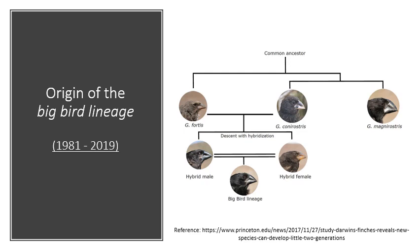The fourth case study involves the origin of the big bird lineage in the Galapagos Archipelago, discussed in detail in the previous lecture. A bird flew from one island to another and mated with the resident species Geospiza fortis, a medium ground finch. It was initially thought the new bird was a hybrid of Geospiza fortis and Geospiza scandens, but phylogenetic analysis revealed it was actually a hybrid of Geospiza fortis with Geospiza conirostris. This demonstrates the importance of phylogenetics as a tool in biology.